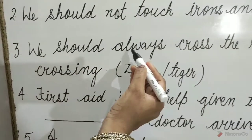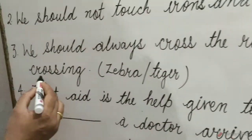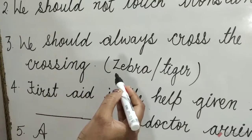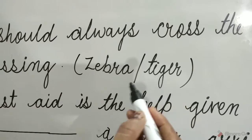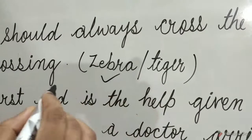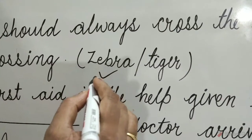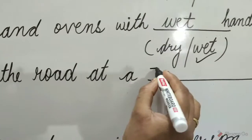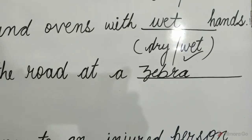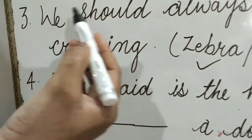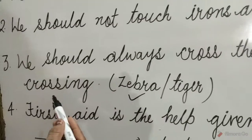Question 3: We should always cross the road at a blank crossing. The options are zebra and tiger. The zebra option is correct. So tick on zebra and write here: zebra. We should always cross the road at a zebra crossing.